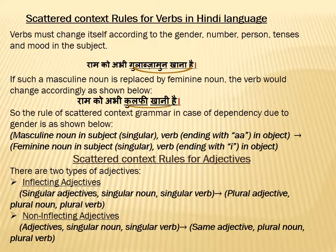If this masculine noun is converted into a feminine noun like kulfi, then khana is also converted into khani. So the scattered context grammar produces a rule: masculine noun in subject, singular, verb ending with 'a,' maps to feminine noun in subject, singular, verb ending with 'i.'